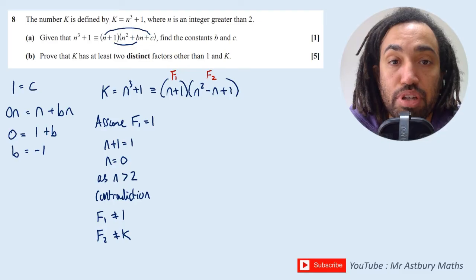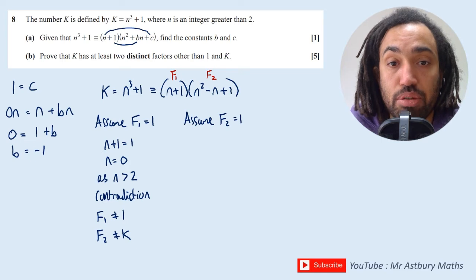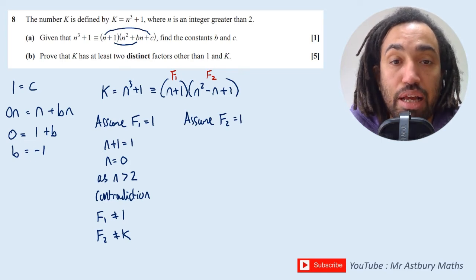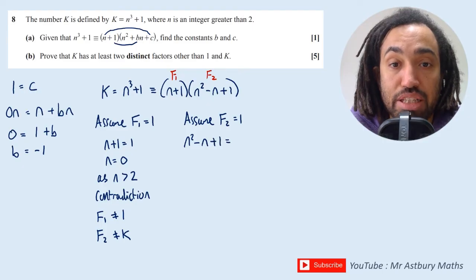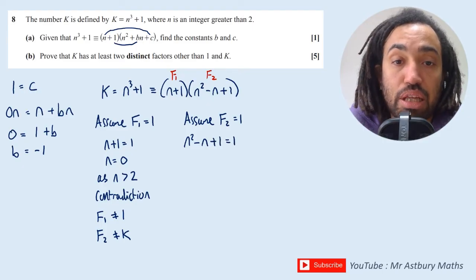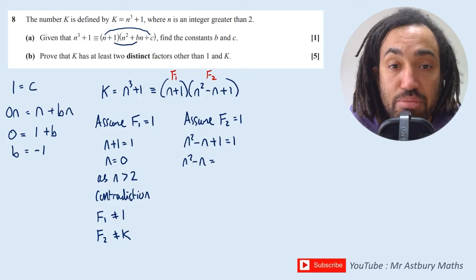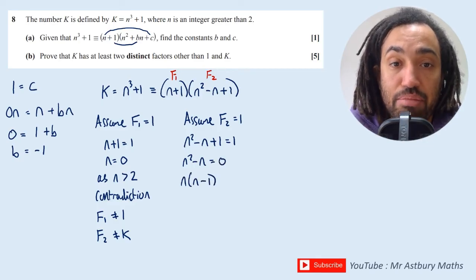Okay great, so that proves that F₁ can't be 1. And then what I'm going to do is assume that F₂ = 1, and subbing in I'm going to get n² - n + 1 = 1. Subtracting 1 from both sides gives me n² - n = 0, which gives me n(n - 1) = 0, which tells me that n must be 0 or n = 1.